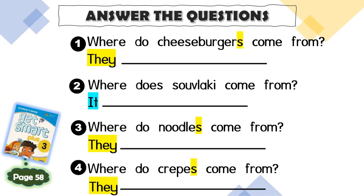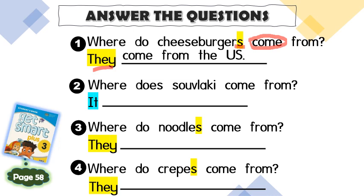Look at the first one: where do cheeseburgers come from? First of all, you have to identify the subject. If the subject is plural, you have to use the base form of the verb. Now we know cheeseburgers are plural, so you shouldn't add any S after the verb. The answer is: they come from the US.